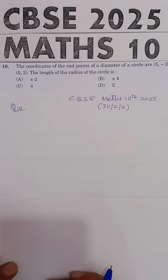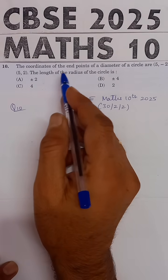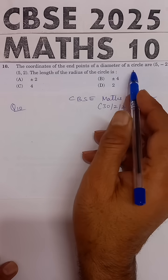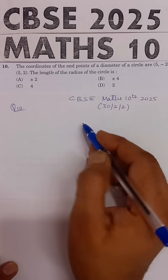This question is from CBSE Maths 10th, 2025 Board Examination. The problem states: the coordinates of the endpoints of a diameter of a circle are 5, minus 2 and 5, 2.